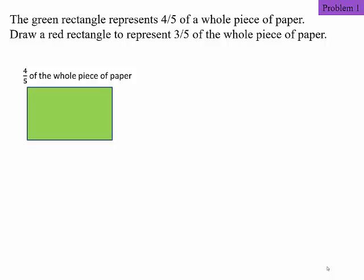The green rectangle represents four-fifths of a whole piece of paper. So your job is to draw a red rectangle that represents three-fifths of the whole piece of paper. Now this task will be easy if they give us the whole piece of paper. Unfortunately they only give us four-fifths of the whole piece of paper.